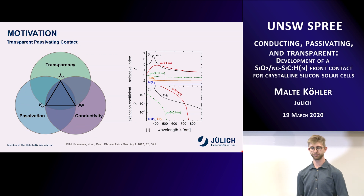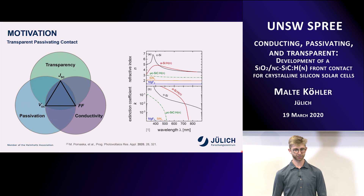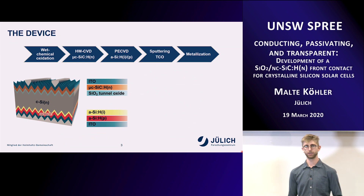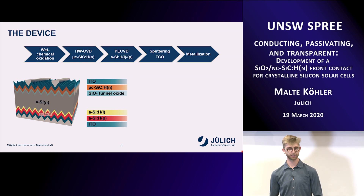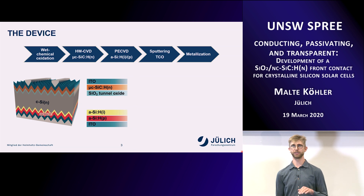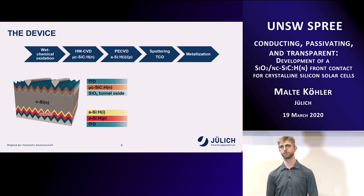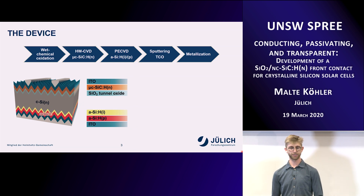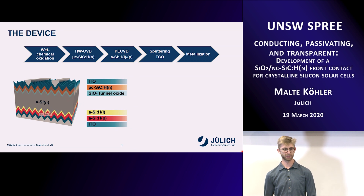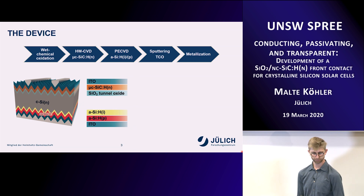Since transparency is given for this stack, we worked along passivation and conductivity. The device looks like this: we have crystalline silicon, an N-type wafer which is wet chemically cleaned, and then we prepare a silicon tunnel oxide on top. This is necessary because when we directly apply the silicon carbide to the silicon wafer interface, we destroy the interface due to the hot wire CVD deposition, which introduces a lot of hydrogen radicals during the process. We also tried amorphous silicon as a buffer layer, but it has a lower band gap and is etched away, so it's not a protective layer. We need the silicon tunnel oxide for the silicon carbide deposition, and afterwards we deposit the silicon carbide by hot wire CVD.